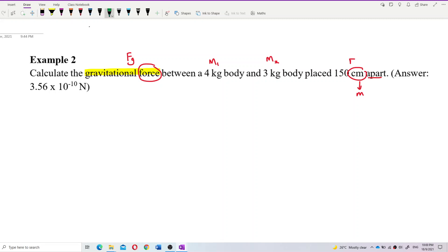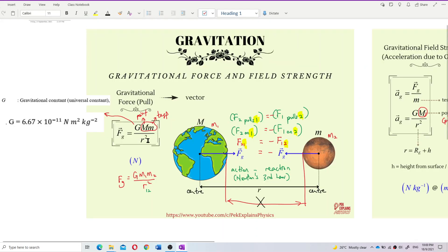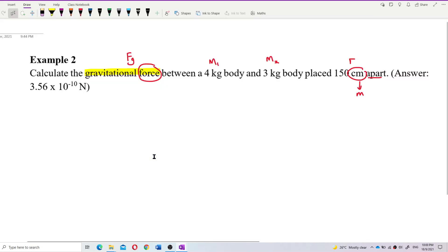So let us use the formula for gravitational force. Gravitational force is GmM over R square. Or Gm1, M2 over R square. The unit for force is Newton. So use this formula. Formula for gravitational force is Gm1, M2 over R square.